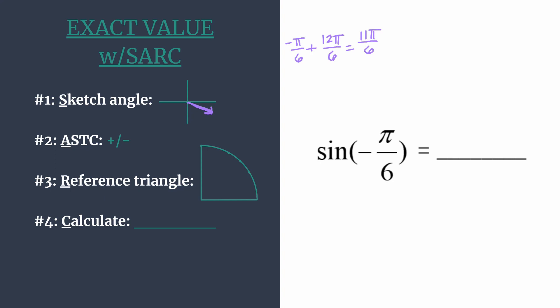Alright, so our angle is sketched, our terminal side is in the fourth quadrant and now we can move on to our second step where we determine the sign of our exact value. So ASTC is an acronym for all students take classes and it tells us which trig functions are positive in each quadrant.